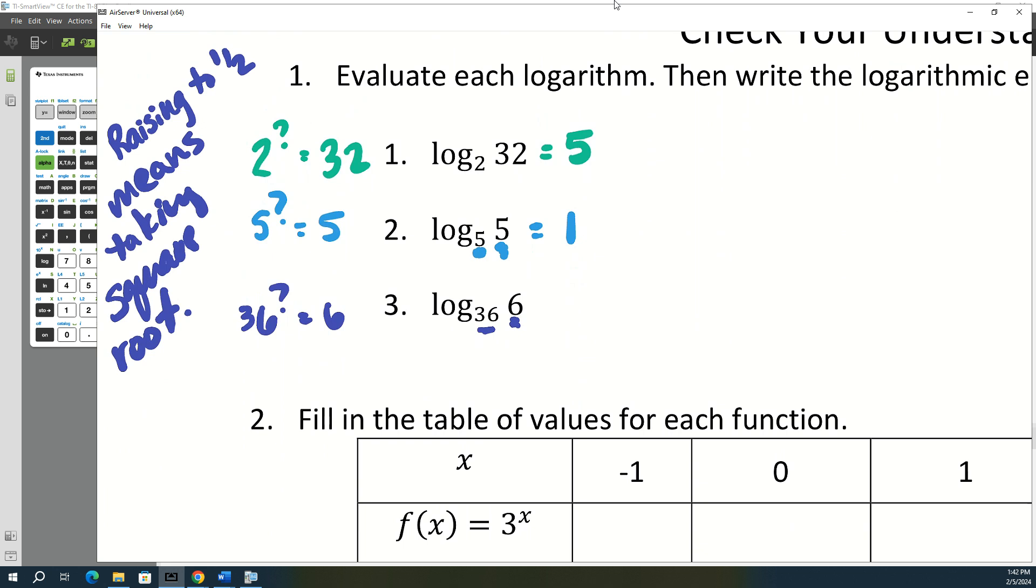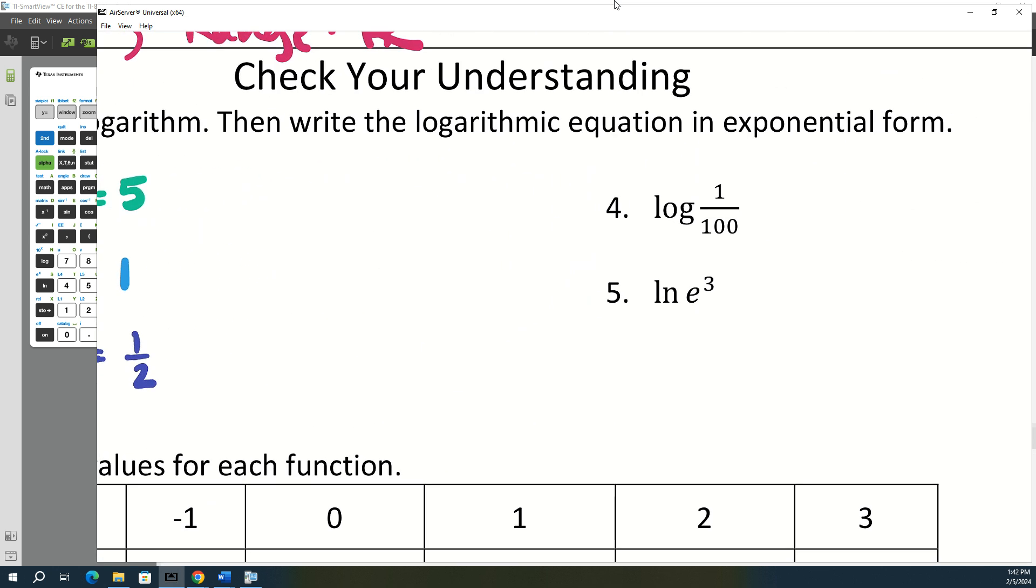So any time your exponent is a fraction, it's some kind of root. So one-half means square root, one-third means cube root, one-fourth means fourth root. You learned that in algebra two. I was just surprised if anybody remembered it. You learned a lot in algebra two. So because it's the square root of 36, that means 36 to the one-half.